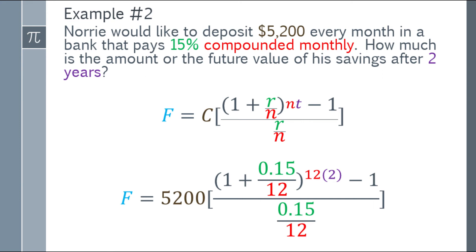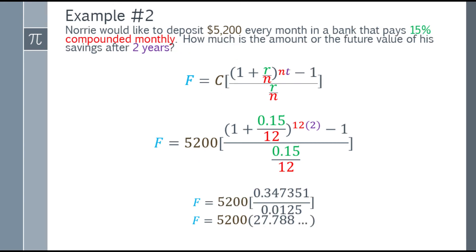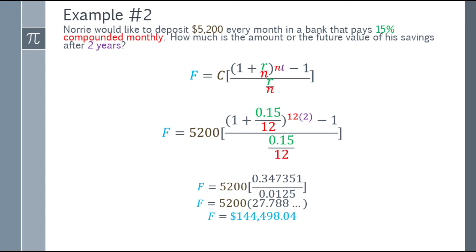Let's simplify the numerator first. 0.15 over 12, add 1, raise to the 24th power (since 12 times 2 is 24), then subtract 1, giving 0.347351. For the denominator, 0.15 over 12 equals 0.0125. Divide the numerator by the denominator: 27.788 and so on. Multiply by 5,200 and you get 144,498.04.